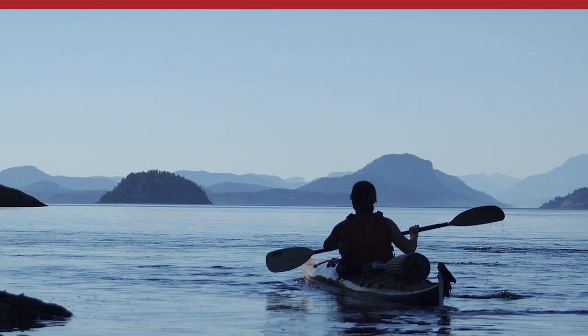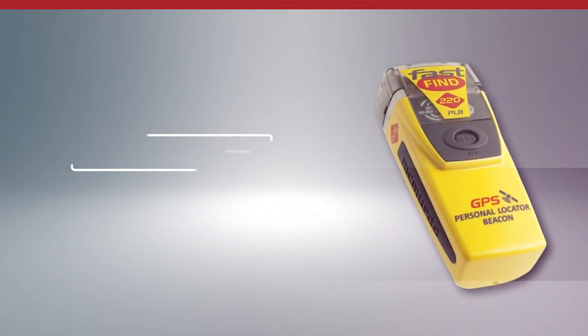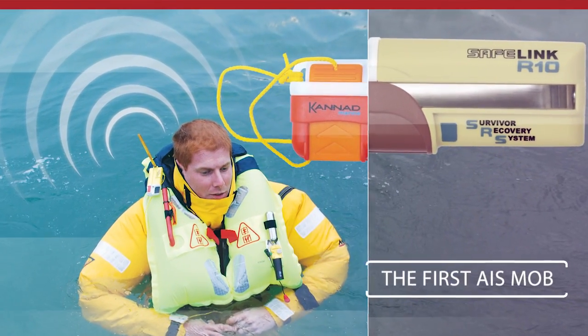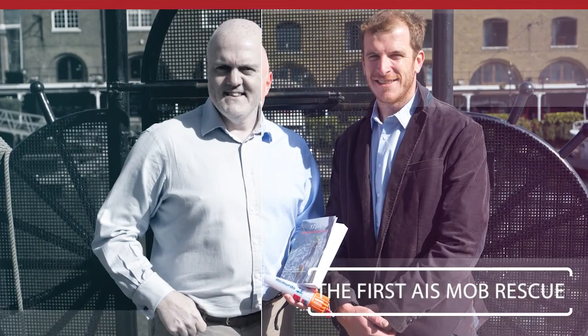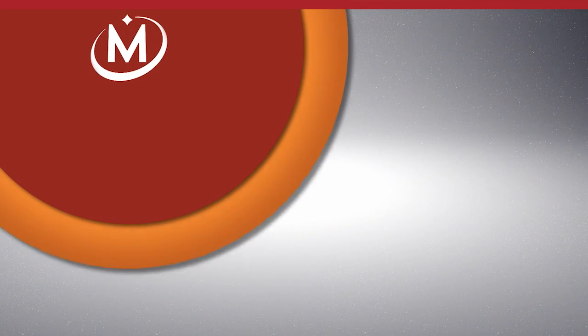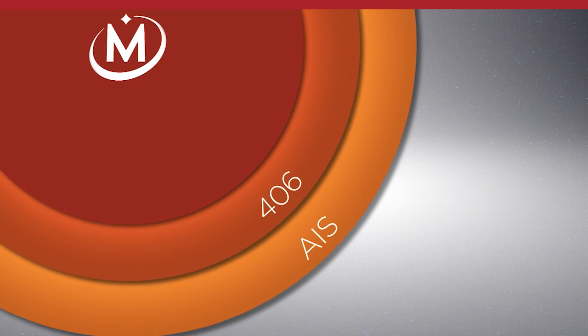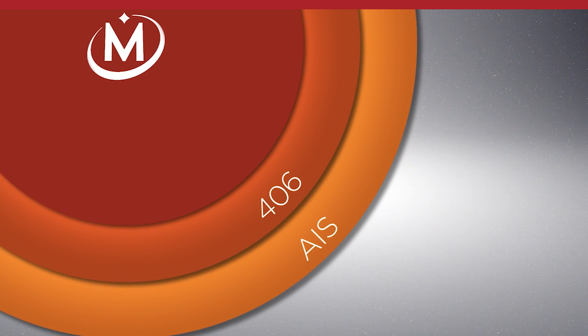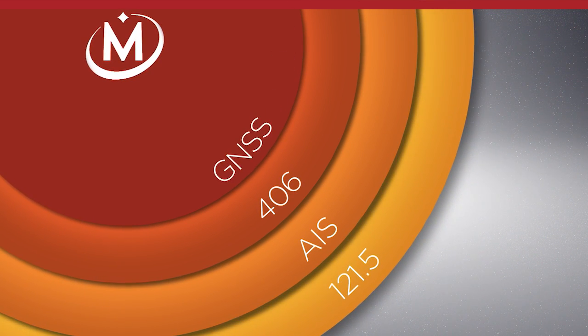McMurdo has a long heritage of innovation. The first 406 PLB, the first AIS MOB, the first AIS MOB rescue, and now, the first convergence of AIS and 406. The first EPIRB with four search and rescue frequencies.